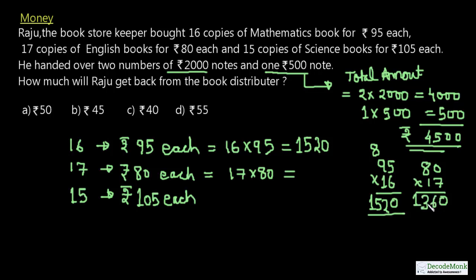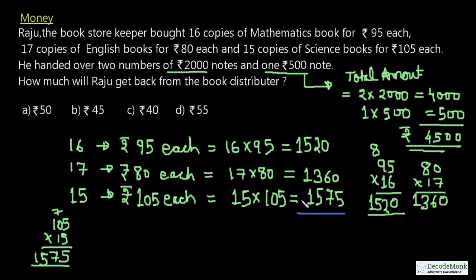For science books, 15×105: 15×5 = 75 carry 7, 15×0 = 0 plus 7, and 15×1 = 15, giving us ₹1575. Now we need the total amount required.